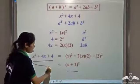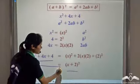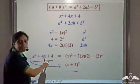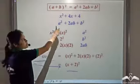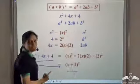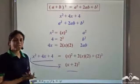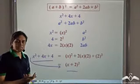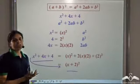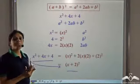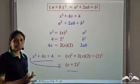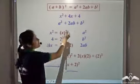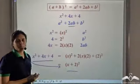Whenever you see an expression containing 3 terms in which 2 are perfect squares, simply check whether the third term is of the 2ab form. If it is, you can apply the identity directly.